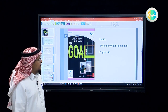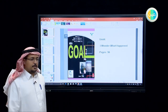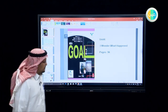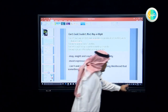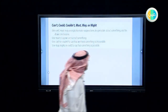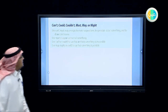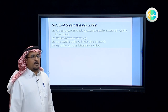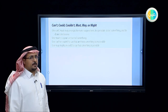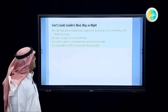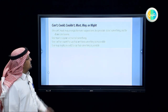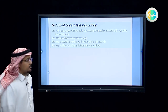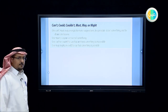In this lesson we are going to complete the grammatical rule on page 56. The second part of the grammatical rule — the first part was about past perfect. Now we are going to deal with can't, could, couldn't, must, may, or might. These modals are used to make suppositions.